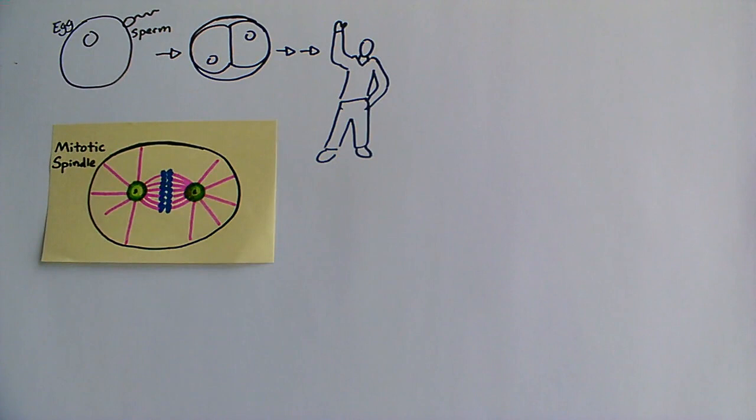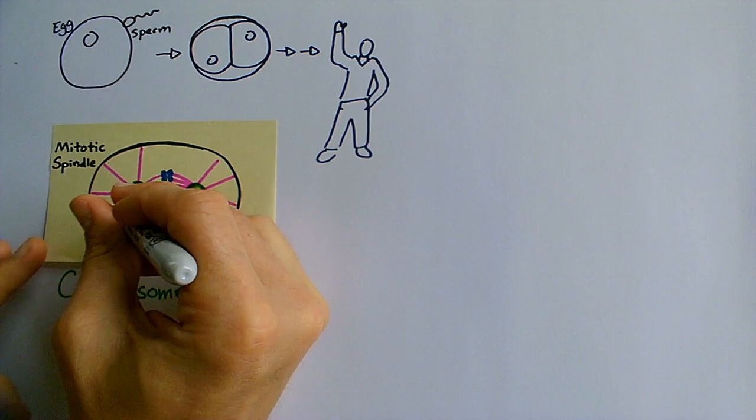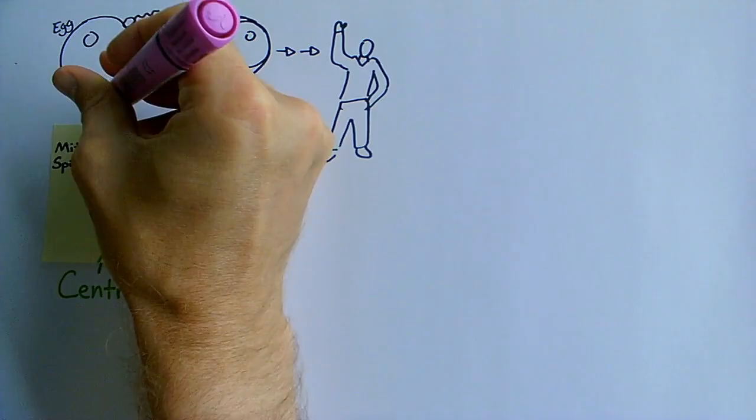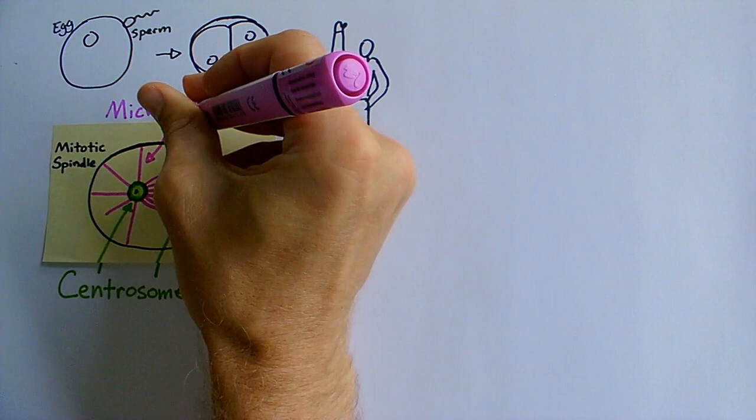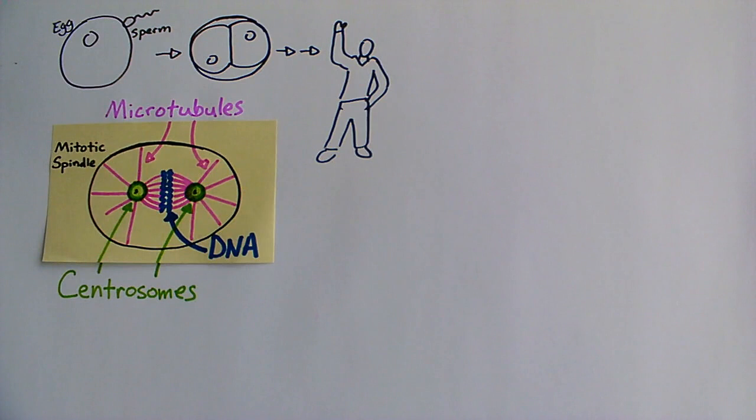The mitotic spindle is made by two centrosomes that build stiff fibers of the protein tubulin, called microtubules, which connect to DNA. To effectively pull apart DNA, centrosomes build hundreds, sometimes even thousands of microtubules.